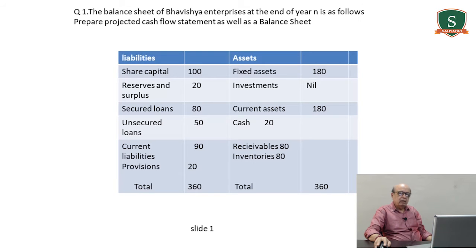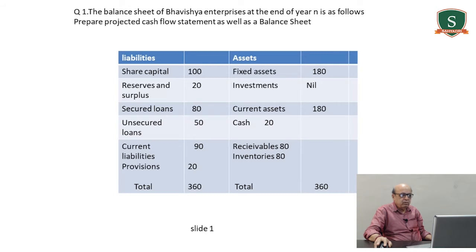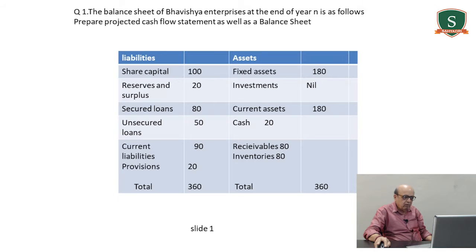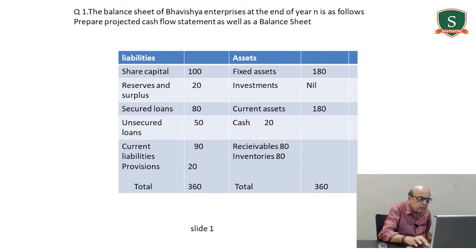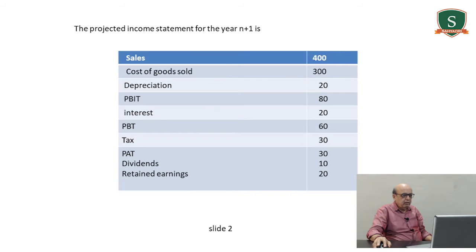...the balance sheet and profit and loss account. In this problem, the balance sheet of Bavishya Enterprises at the end of year N is as follows. Prepare the projected cash flow statement as well as a balance sheet. On the liability side: share capital 100, reserves and surplus 20, secured loan 80, unsecured loan 50, current liabilities 90, provisions 20. Fixed assets 180, current assets 180 comprising cash 20, receivables 80, inventories 80. Total 360.